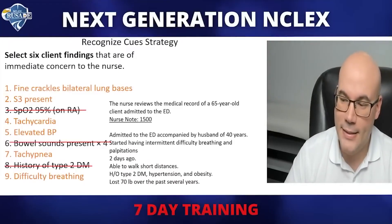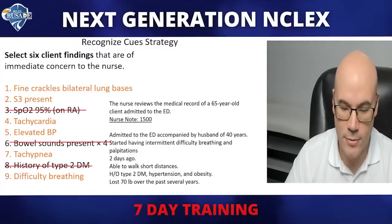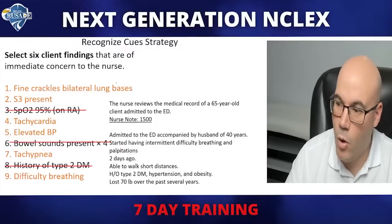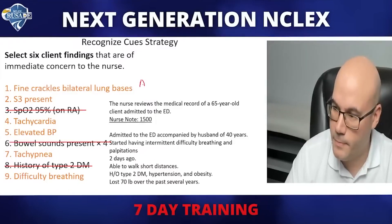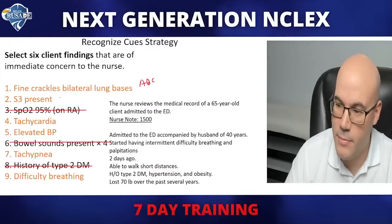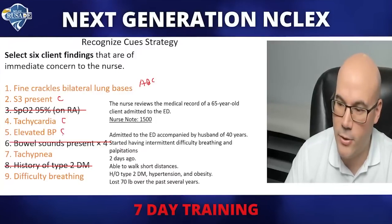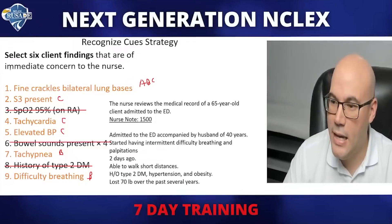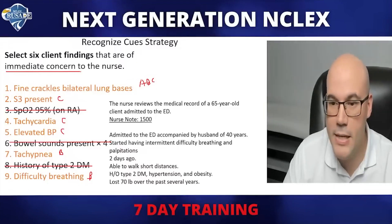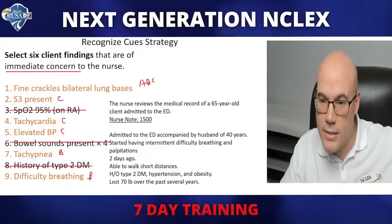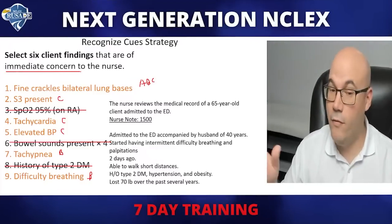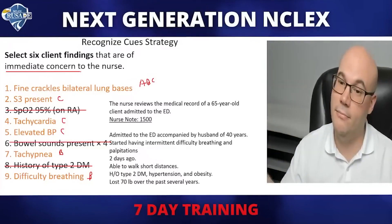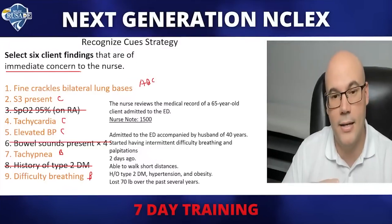If we look at this deeper, using critical thinking: answer one is ABC compromise — breathing. Answer two is circulatory. Four is circulatory. Five is circulatory. Seven is breathing. Nine is breathing. What is the immediate concern in this scenario? ABC compromise. You know this already from Maslow's Hierarchy of Needs and the Sauer Method. If you don't know what I'm talking about, you need to go back to the first training here at NCLEX Crusade International.